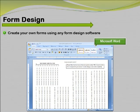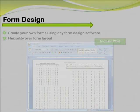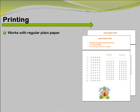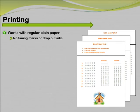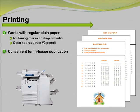You can create your own scannable forms for use with Remark Office OMR using any form design software such as Microsoft Word. This ability to create your own forms allows you to have complete flexibility over the layout and content of your forms. Having the ability to process forms printed on plain paper eliminates the need for special paper forms that contain dropout inks and timing marks down the side. Respondents are no longer required to use a number two pencil to fill in their responses. Forms can be printed on a laser printer or photocopied, which makes in-house duplication easier than ever before. By using plain paper and eliminating the need to outsource the printing process, Remark has saved customers thousands of dollars per year in form costs.